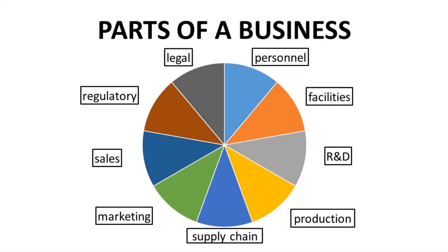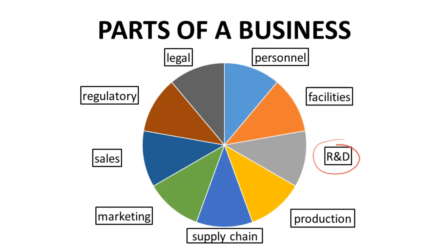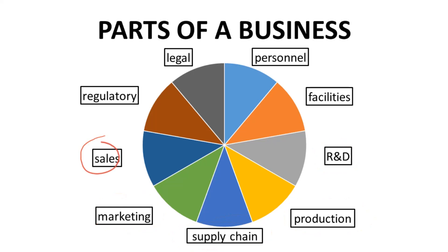On the screen is a big circle that's supposed to represent a company, and then there are the parts of the company — the pie wedges: personnel, the physical facilities of the company, research and development, production, supply chain management, marketing, sales, regulatory compliance, and legal affairs. Research and development, R&D, is the piece most closely associated with drug discovery and development.